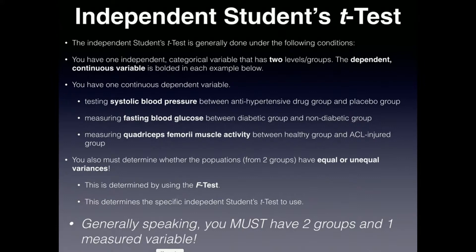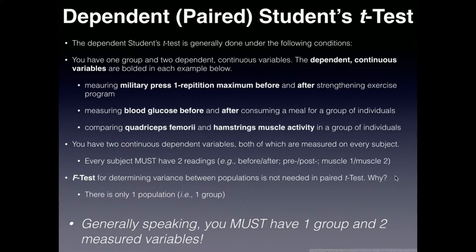Another easy way to identify a dependent t-test is a before/after or pre/post design — that's a giveaway that it's dependent. For example: blood glucose before and after a meal; your pre-training one rep maximum and post-training; or a weight loss program measuring weight before the intervention and after. You would compare those with a dependent t-test because every person is going to have two measurements — one before and one after, one pre and one post.